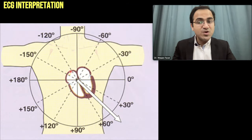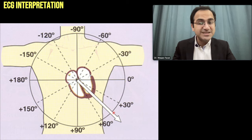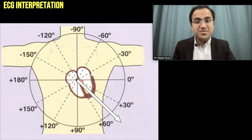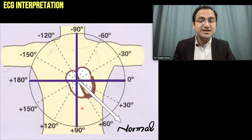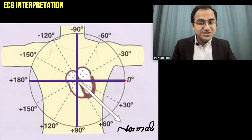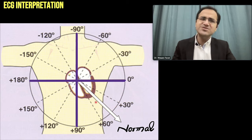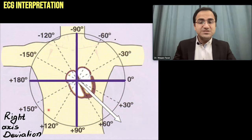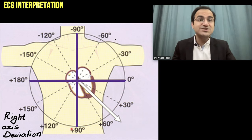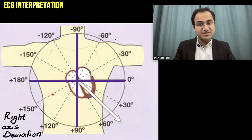This picture shows the normal flow of current — a vector pointing in the left lateral and downward direction. In the hexaxial plane, we divide it into four quadrants. If the vector of current flow is present between 0 to +90 degrees, it is normal. If it is present in the right quadrant, that shows right axis deviation.